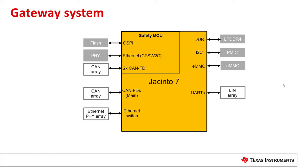Additional devices that need to be connected to the Jacinto 7 platform include the LPDDR module for runtime code and data storage, PMIC for power management, and eMMC for higher-density non-volatile storage. For higher storage needs and faster access, an NVMe SSD disk can potentially be interfaced over PCIe.